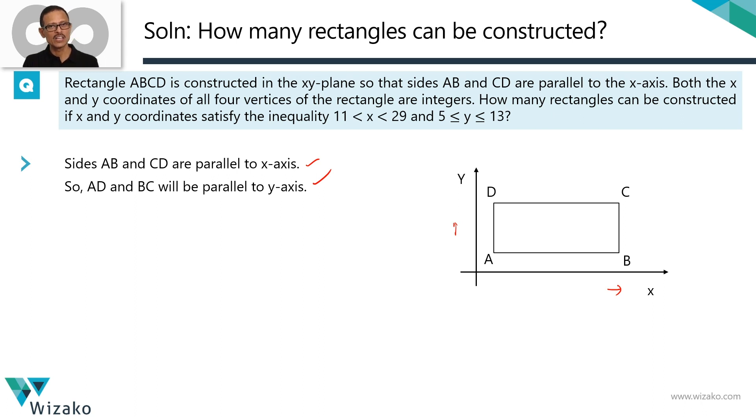The second point they have said is that X and Y coordinates of all four vertices need to be integers. I'll just pick one example set of values so that we know what we are talking about. Something like A could be 13, 7 and B could be something like 16, 7. Correspondingly, C the X coordinate is going to remain the same. Let's say the Y coordinate becomes 10 and in this case it's going to be 13, 10. Notice that all four values, the X and Y coordinates of all four vertices end up being integers.